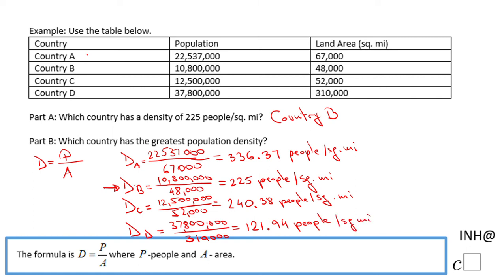Looking at all the densities, the country with the greatest population density is country A, because 336.37 is the largest number. If you enjoyed this video, don't forget to click the like button and come back to C-square for more help. Thank you.